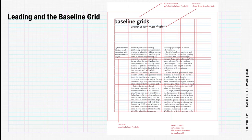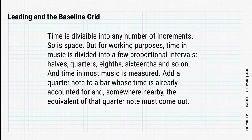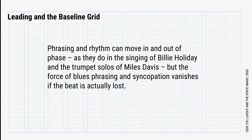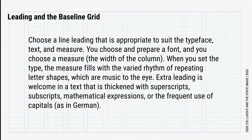Robert Bringhurst has a lot to say about leading in his book The Elements of Typographic Style. As he says: time is divisible into any number of increments, and so is space. But for working purposes, time in music is divided into a few proportional intervals — halves, quarters, eighths, sixteenths — and time in most music is measured. Add a quarter note to a bar whose time is already accounted for, and somewhere nearby, the equivalent of that quarter note must come out. Phrasing and rhythm can move in and out of phase, as they do in the singing of Billie Holiday and the trumpet solos of Miles Davis. But the force of blues phrasing and syncopation vanishes if the beat is actually lost. Choose a line leading that is appropriate to suit the typeface, text, and measure. You choose and prepare a font, and you choose and measure the width of a column. When you set the type, the measure fills with the varied rhythm of repeating letter shapes, which are music to the eye.